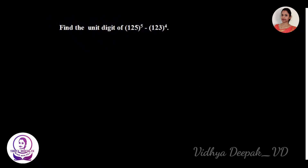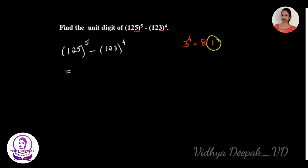Now find the unit digit of 125 to the power 5 minus 123 to the power 4. The last digit of 125 is 5, so its unit place is 5. The last digit of 123 is 3, so we find 3 to the power 4: 3^4 = 81, giving a last digit of 1.